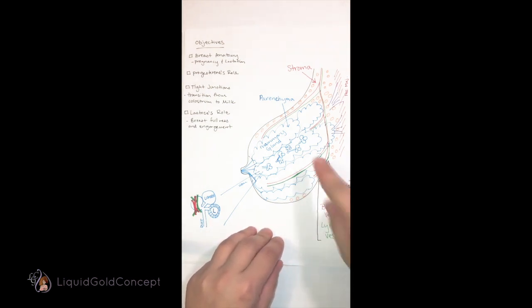At the point of lactation, this glandular tissue actually takes up most of the space inside the breast.